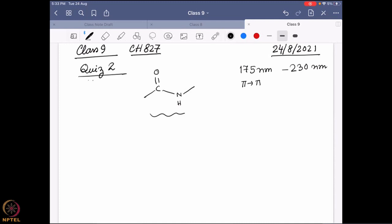pi to pi star transition and n to pi star transition, these are the two primary transitions that actually occur. So pi to pi star transition generally occurs around 175 to 190 or 195 nanometer region, that may differ a little bit depending on what is the overall structure, and whereas the